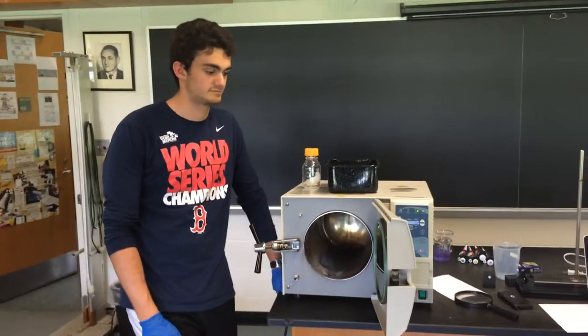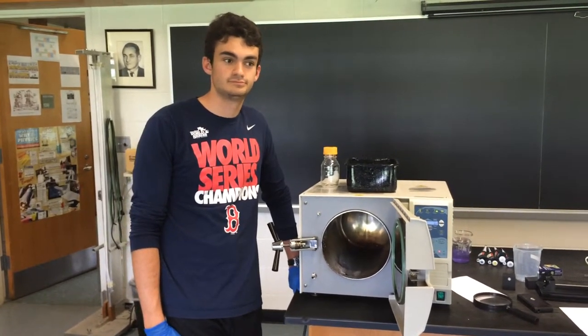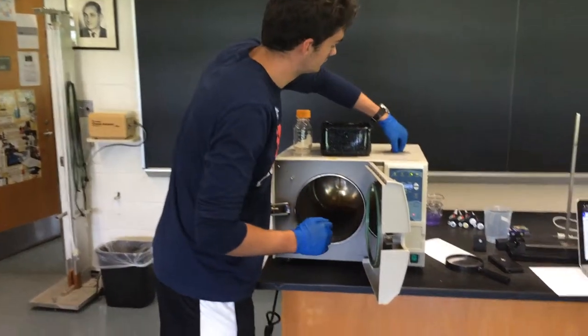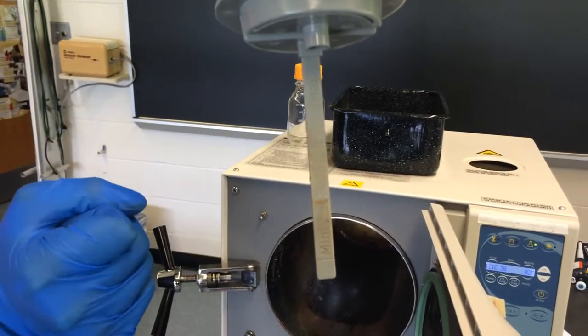Now we're going to go over a step-by-step process of how to use the autoclave. Before starting the autoclave, make sure to check that the water line is between the min and the max. You can see where the gray stick is at the top of the autoclave.